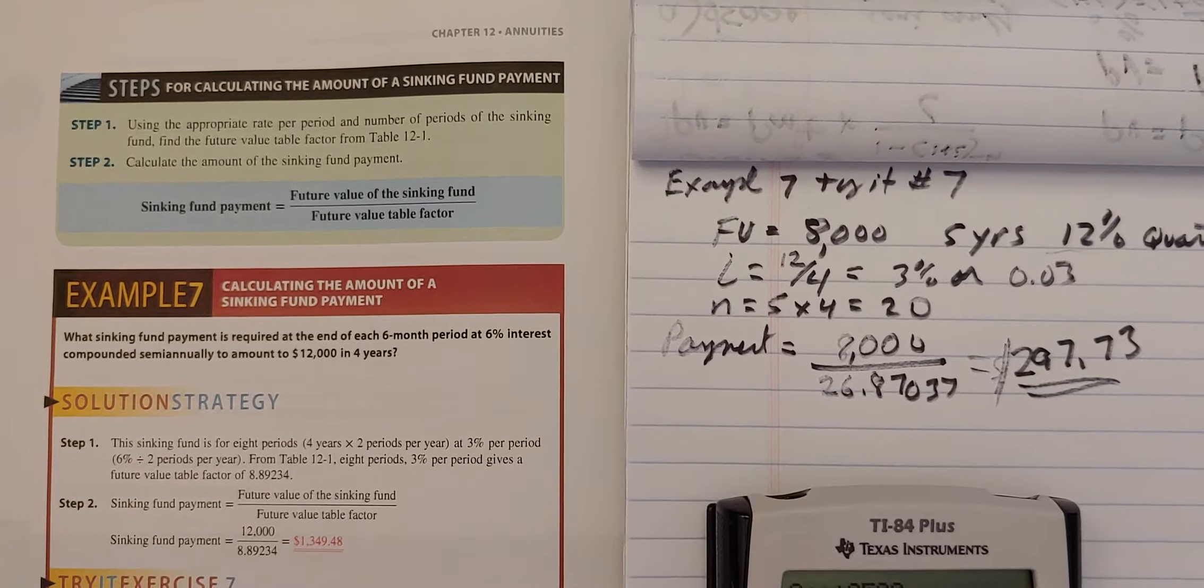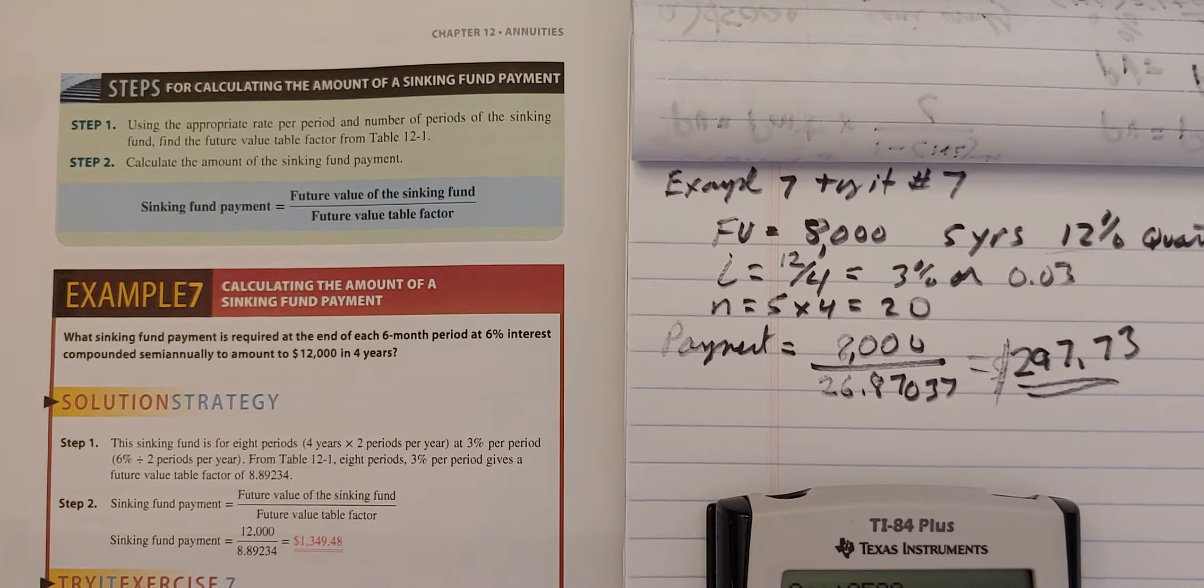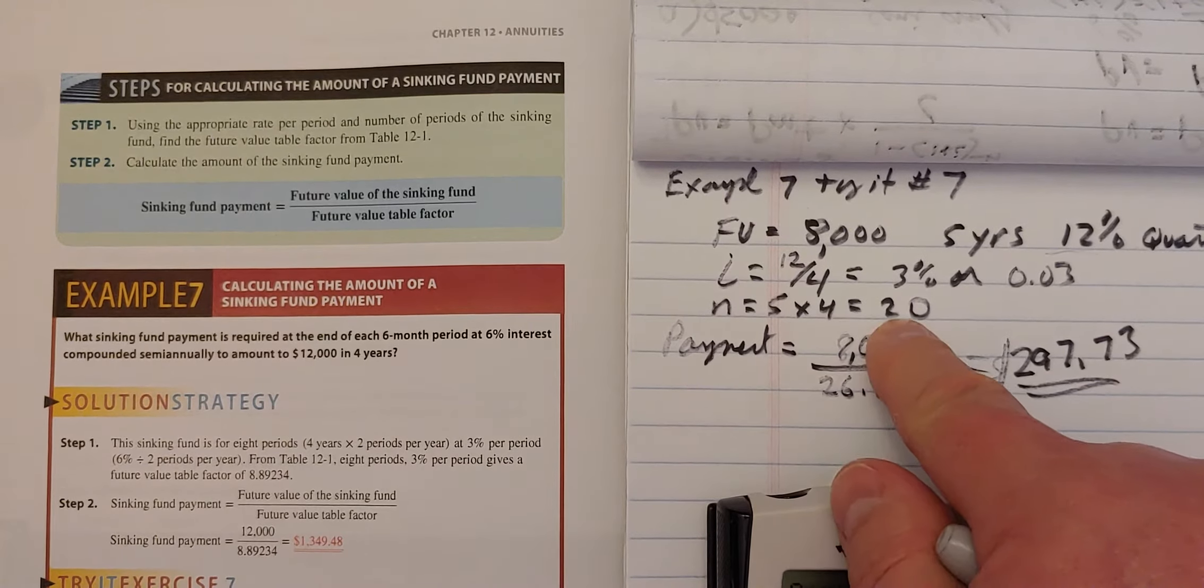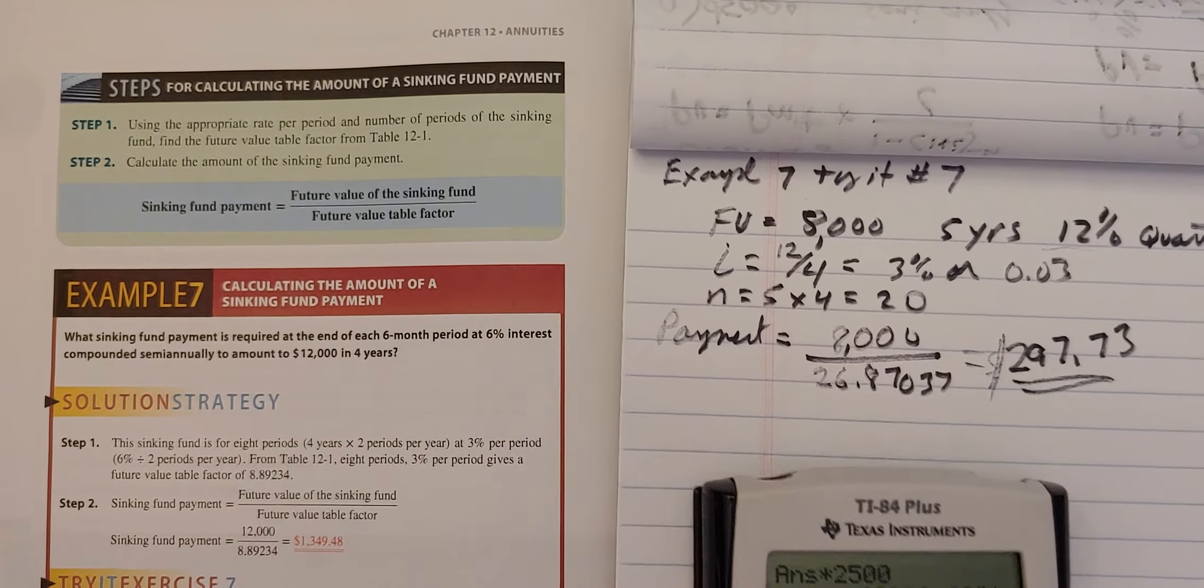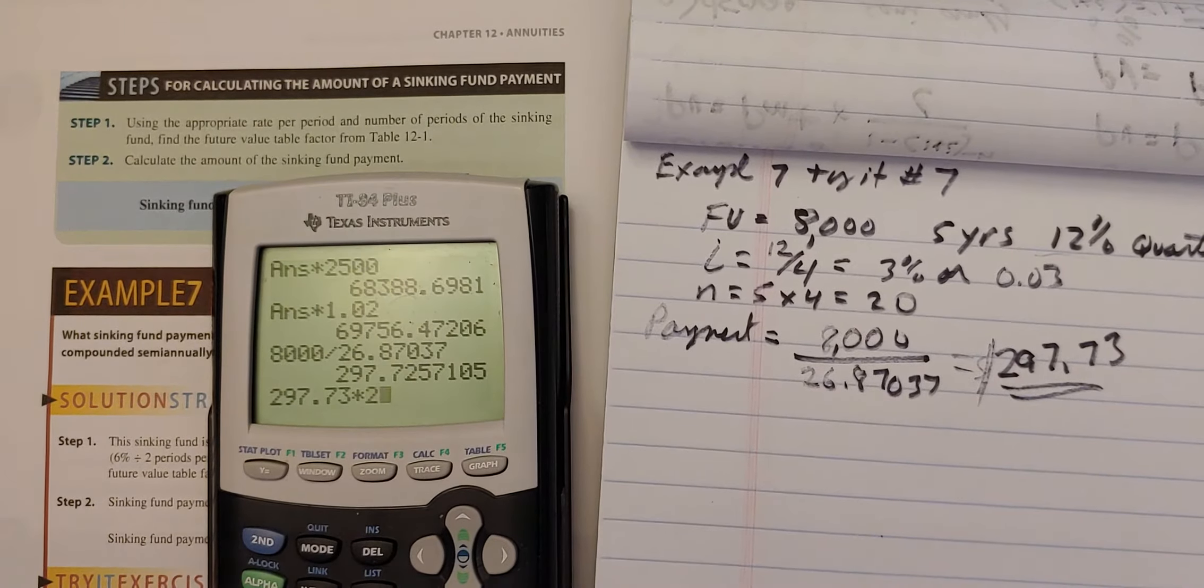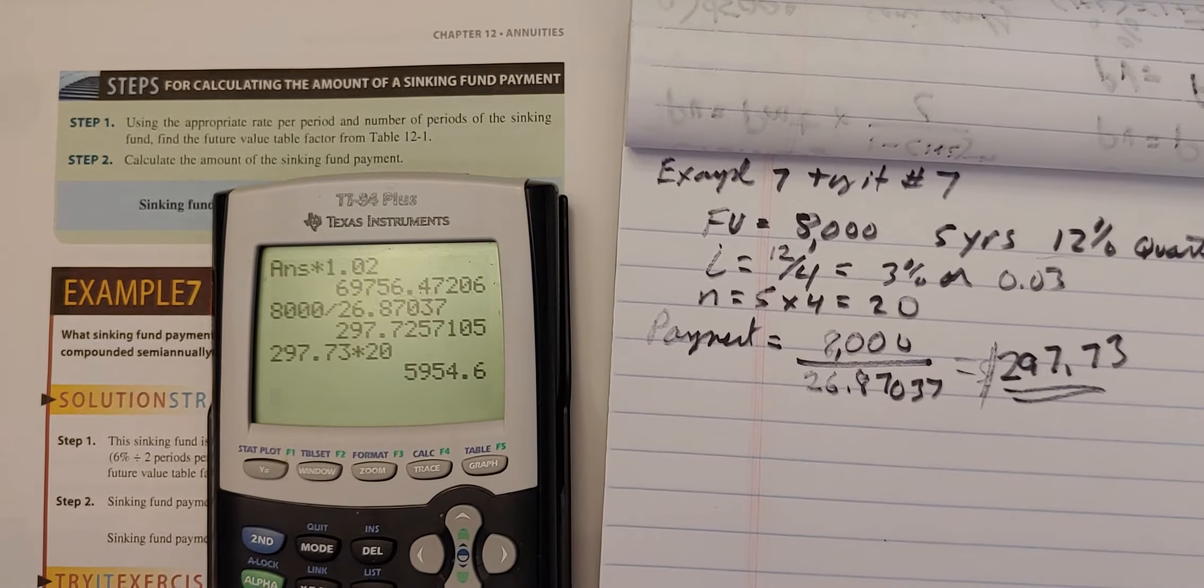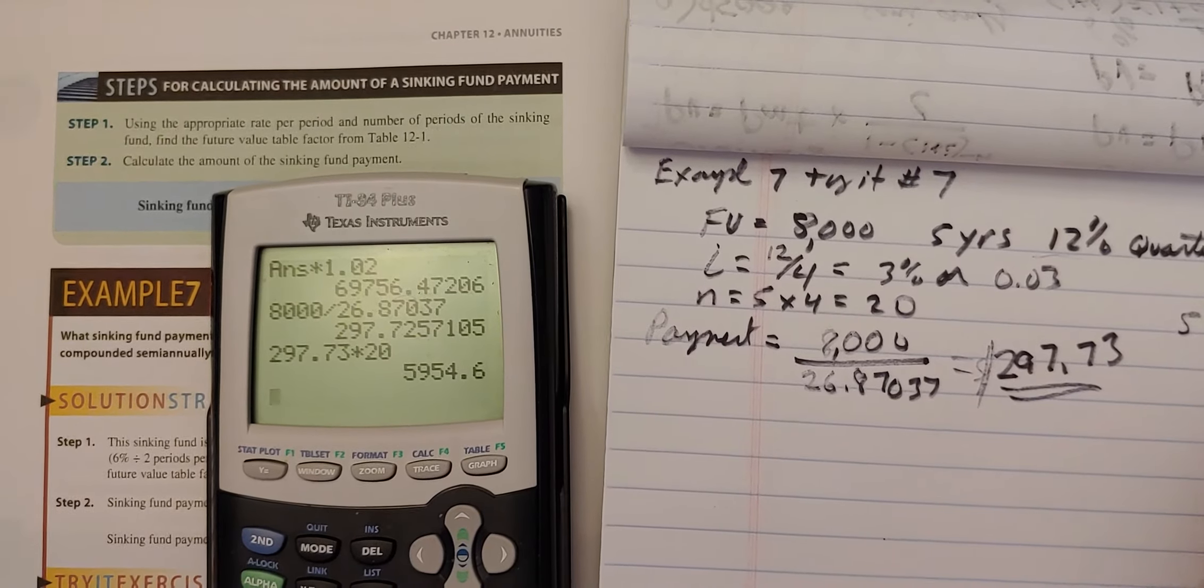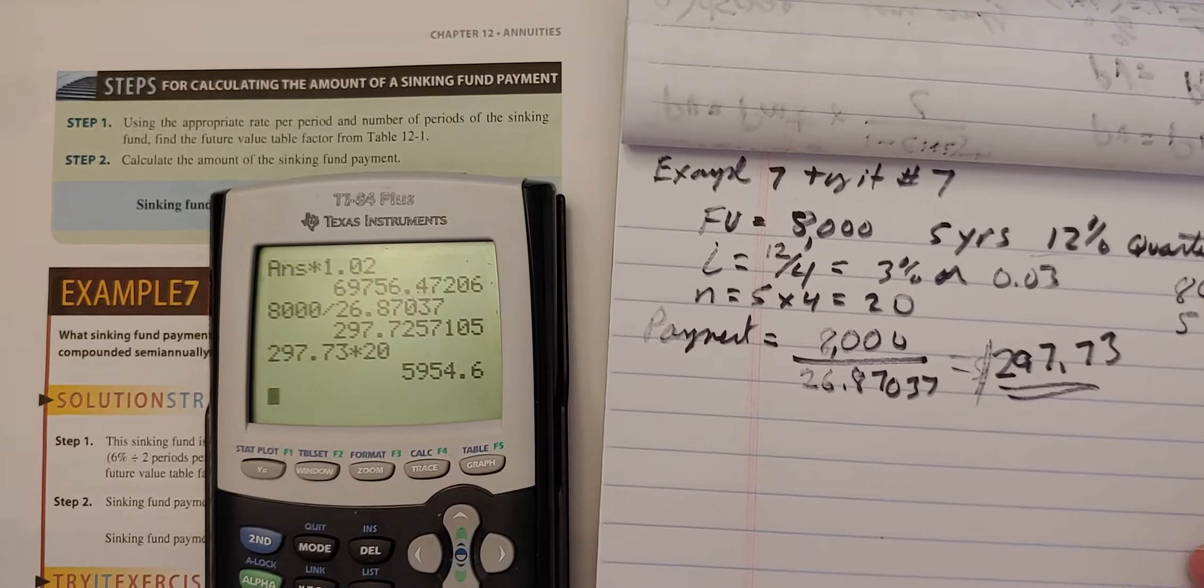Now, I always like to look at what did I pay out of pocket? So the $297.73 times N, the total number of payments. I should push this up here. Times 20 equals $5,954.60.